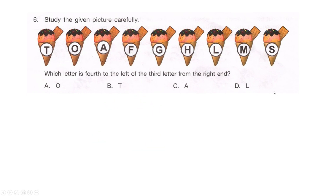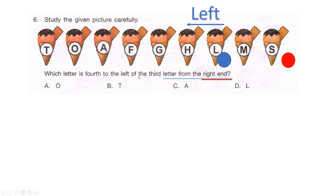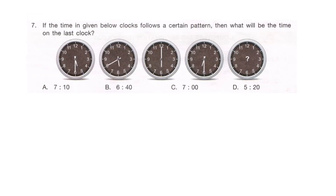Let's read from the end: third letter from the right end — counting from the right: one, two, three — gives us L. Then fourth to the left of L: one, two, three, four. From L going left four places, our answer is option C, which is A.